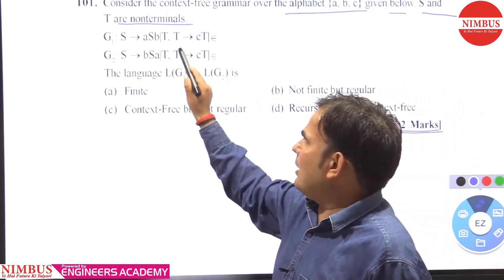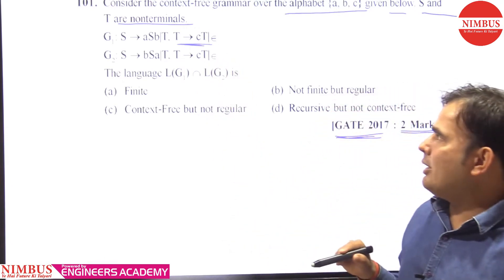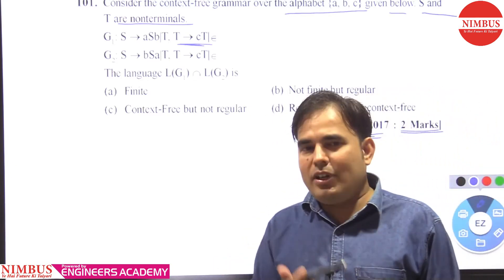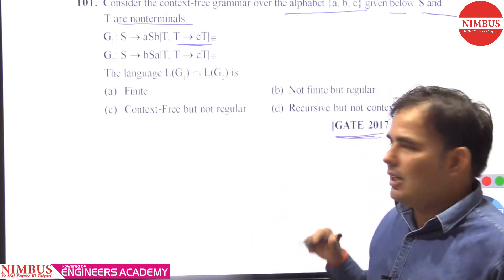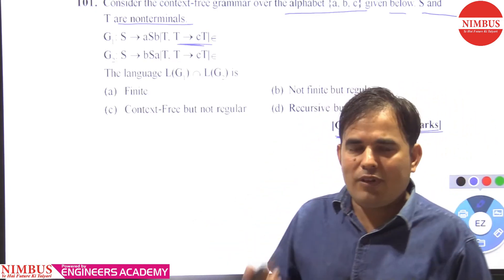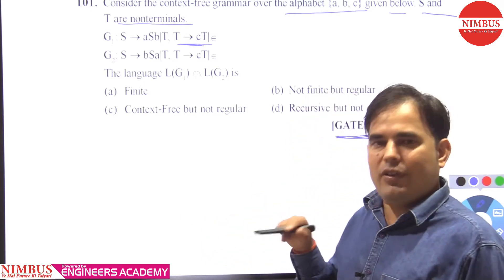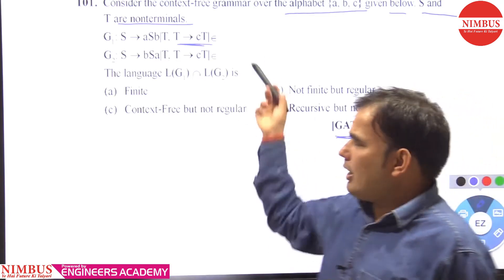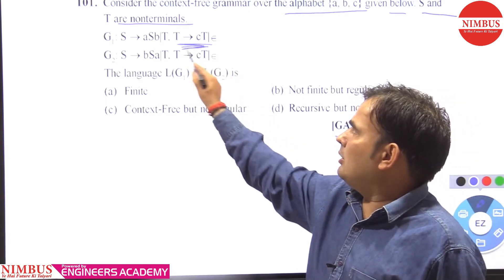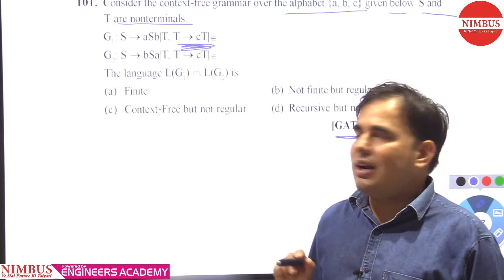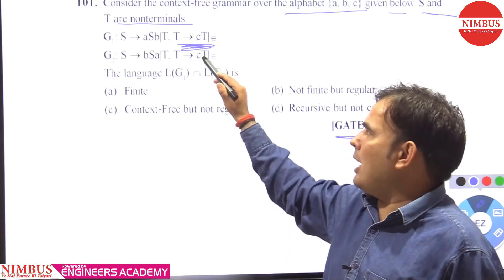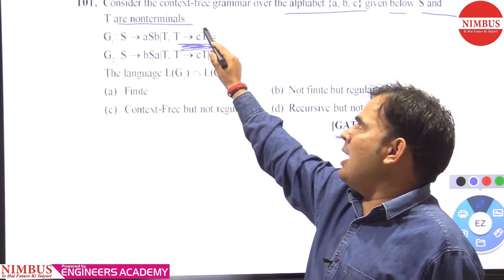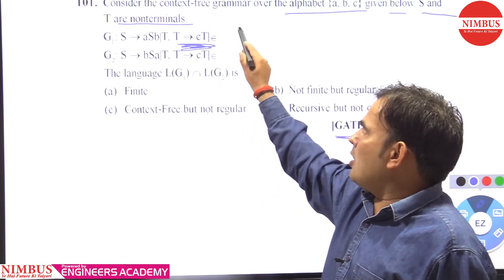You can clearly see here that there is a production T → cT, so in regular language we have two types: left-linear and right-linear. If any grammar contains a left-linear or right-linear production, then it will be a regular grammar. This production is right-linear because the non-terminal is present on the right-hand side of the production.